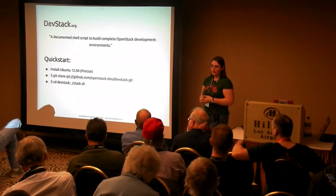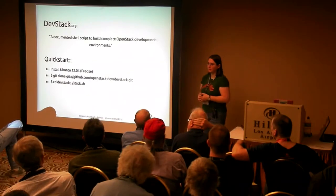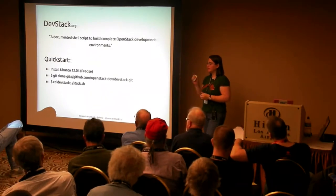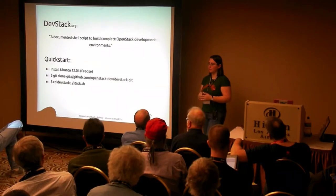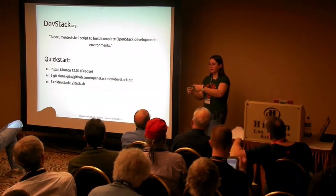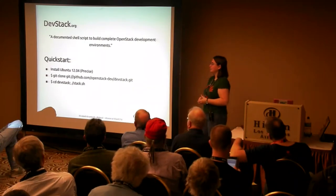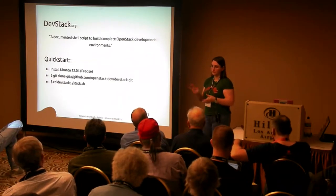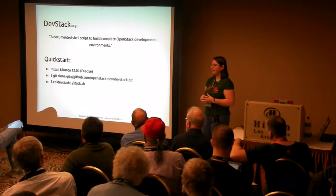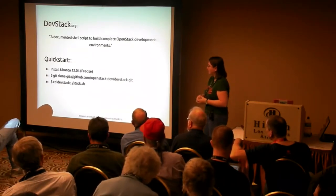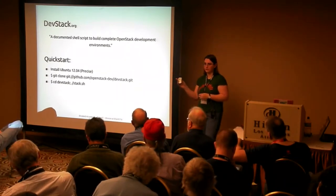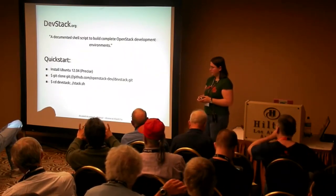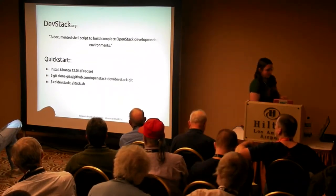The stack.sh script installs a DevStack environment with some default options and it's very easy to get going. These instructions actually do work mostly. You install Ubuntu — just a server. I'd recommend not doing this just on your desktop. You can also boot it into a VM, because it defaults to KVM if you're running a modern system with hardware virtualization. KVM can run inside KVM, so it actually works in virtualization, which is pretty cool. Install Ubuntu 12.04, do all your upgrades, then install git, git clone the repository with the DevStack script, cd into the DevStack directory, and run stack.sh.